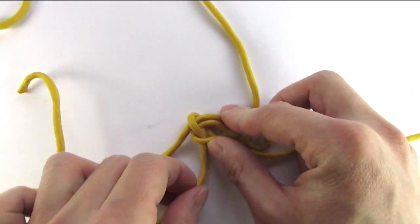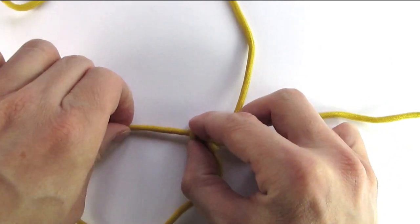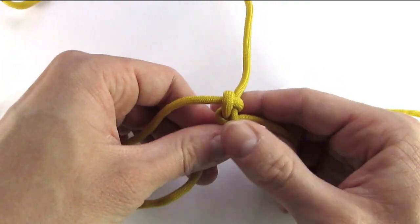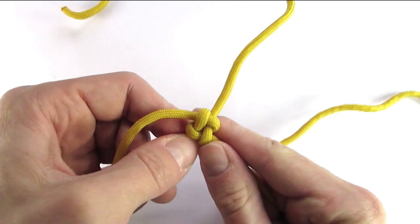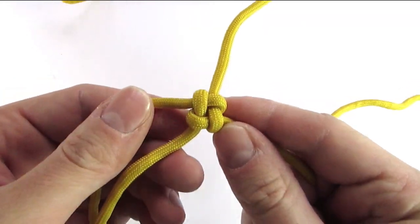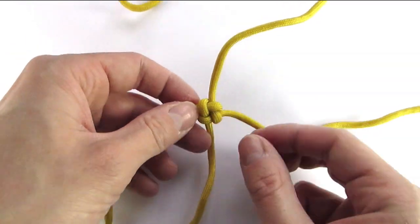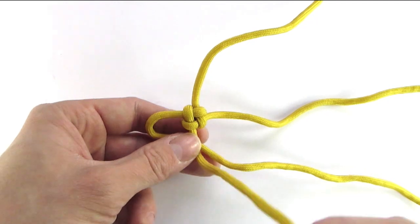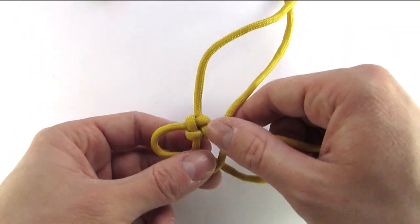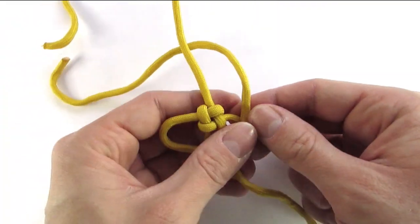And we're just going to make a series of these knots. After you tighten your first one, it should look something like a box knot. And I'm going to continue making crown knots the same way I did the first one.